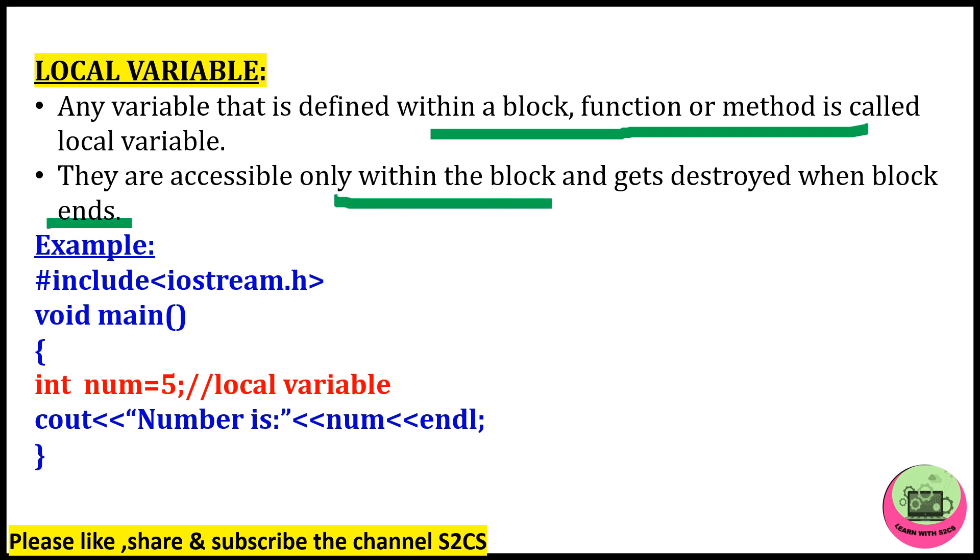Now we will see this through an example. So you can understand it more clearly. See here, there is a main function here. It's a block or I can say it's a main function. Where inside this, inside the braces, I have declared a variable num which is storing the value 5. So now this is inside a block. So this is a local variable. Num is our local variable and its scope will remain until this main function ends.